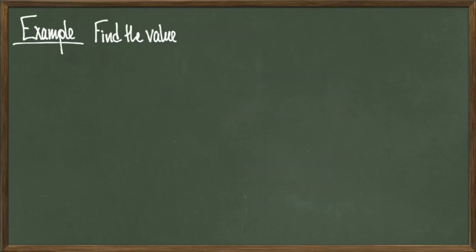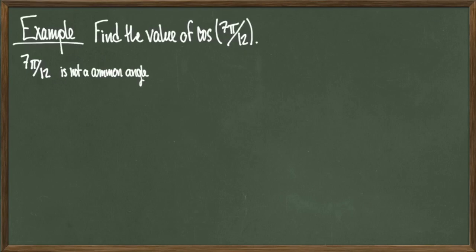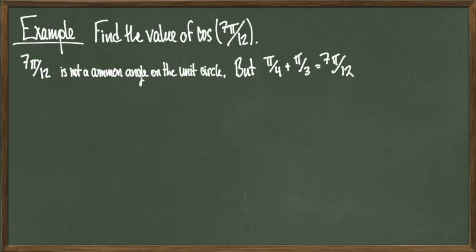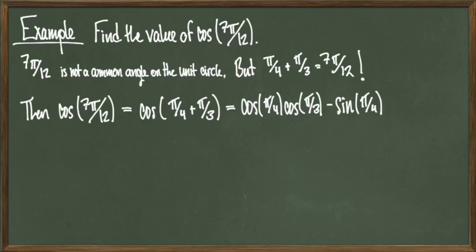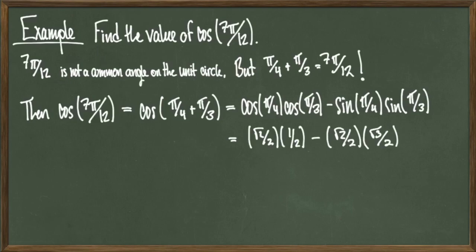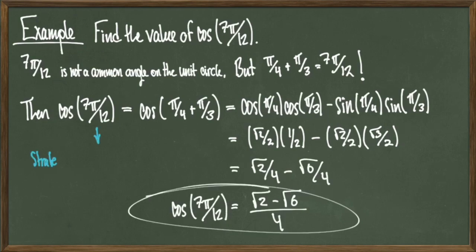Let's do another example. Let's find the value of cosine of 7π over 12. Now 7π over 12 is not a common angle on the unit circle, but we can write it as the sum of common angles. It turns out that π over 4 plus π over 3 equals 7π over 12. So I write cosine of 7π over 12 as cosine of π over 4 plus π over 3, and use the sum formula to get cosine of π over 4 times cosine of π over 3 minus sine of π over 4 times sine of π over 3. After evaluating these trig functions using the unit circle, we find this simplifies to (√2 − √6) over 4.